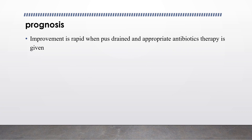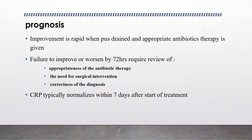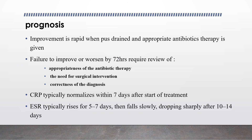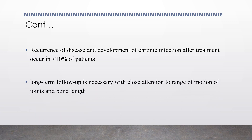Regarding prognosis: improvement is rapid when pus is drained and appropriate antibiotic therapy is given. Failure to improve or worsening by 72 hours requires review of antibiotic appropriateness, consideration of surgical intervention, and evaluation for other differential diagnoses such as bone tumors. CRP typically normalizes within seven days of starting treatment. ESR typically rises for five to seven days, then falls slowly, dropping sharply after 10–14 days of therapy. Recurrence and development of chronic infection after treatment occur in less than 10% of patients, and long-term follow-up is necessary with attention to joint range of motion and bone length.